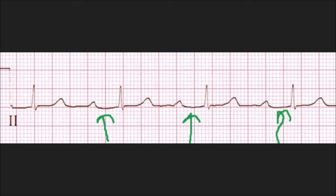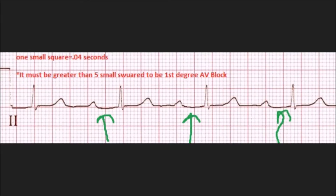When you're going to measure this out, understand that one small square is equal to 0.04 seconds, so it must be greater than five small squares to be a first degree AV block. And again, everything else has to be normal — nothing else can be wrong with the rhythm strip. And that's it in a nutshell. Thanks for watching.